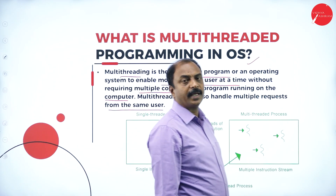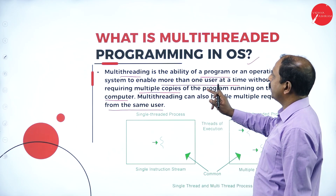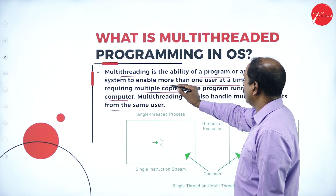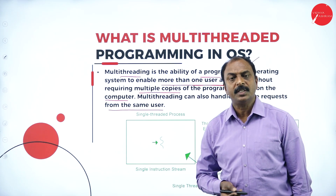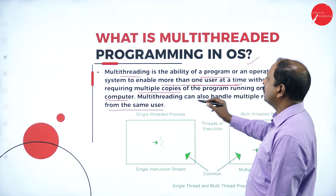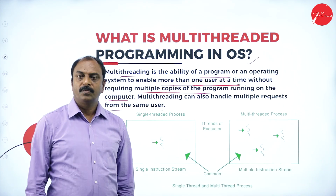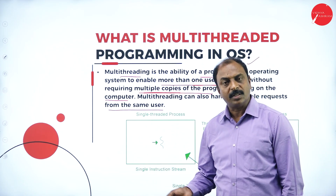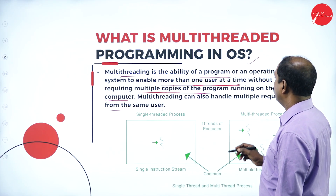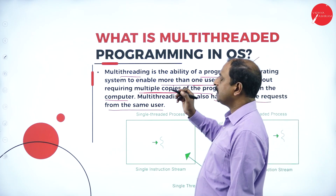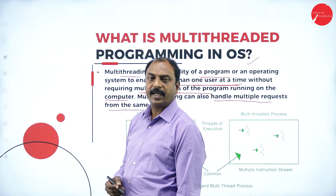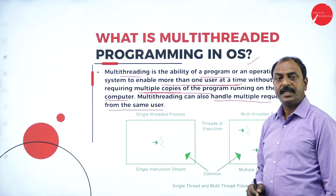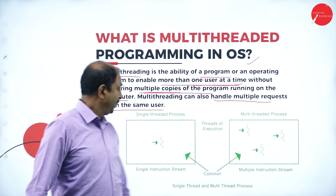In multi-threading, one process or program can have a number of threads. It is the ability of a program or operating system to enable more than one user — or more than one thread — at a time, without requiring multiple copies of the program. The same program can be shared by multiple users. Both multiple users can send multiple requests, and the same user can send multiple requests to the OS.